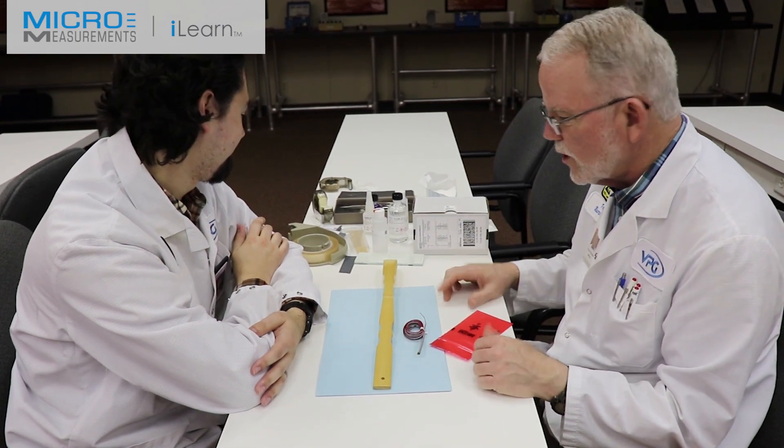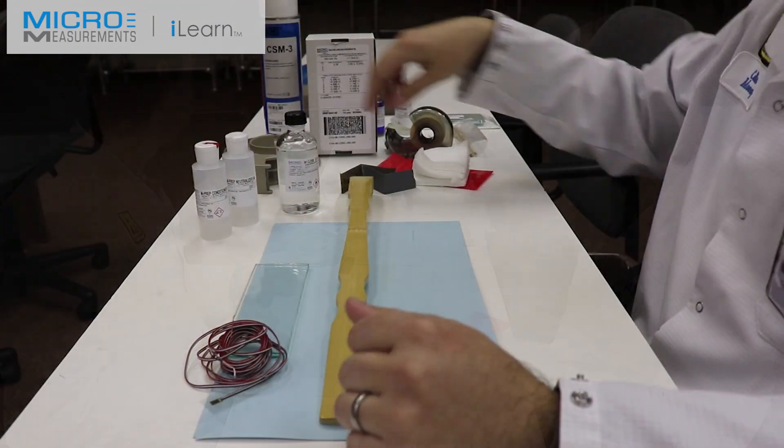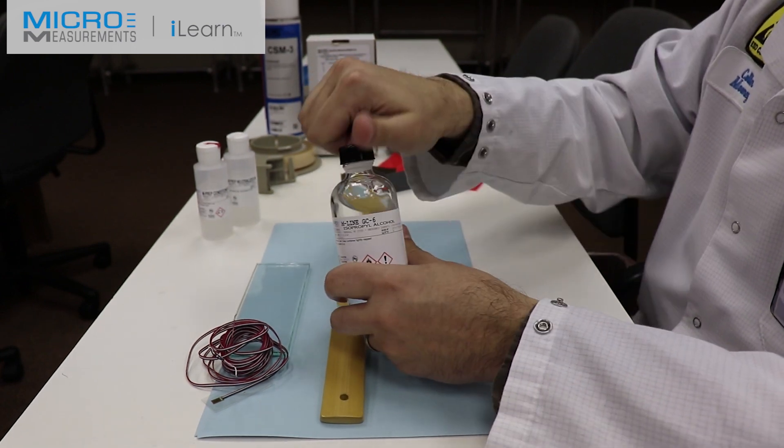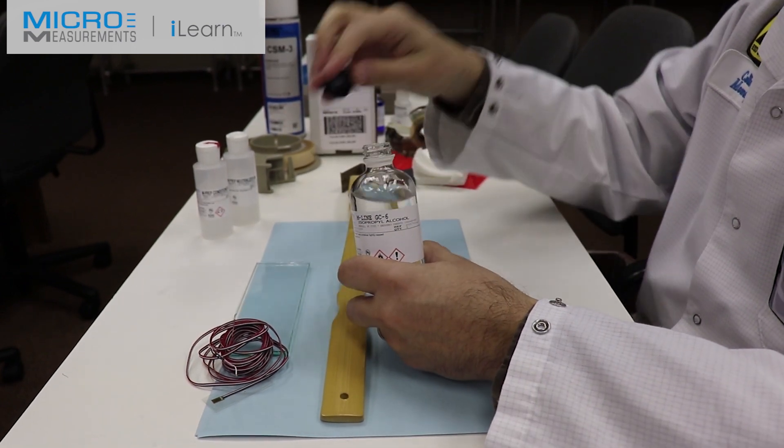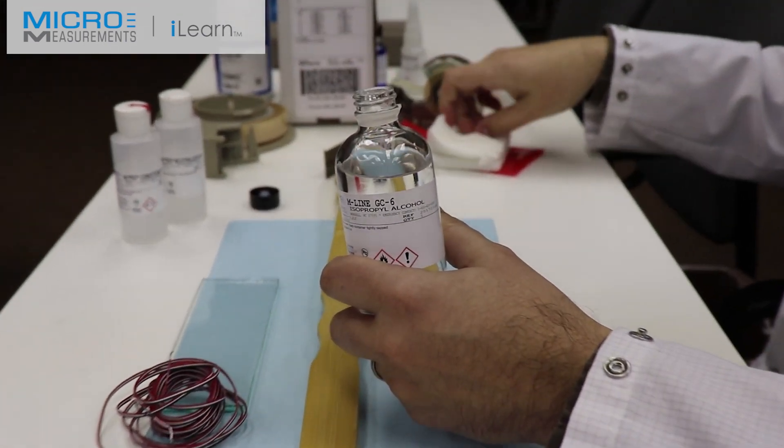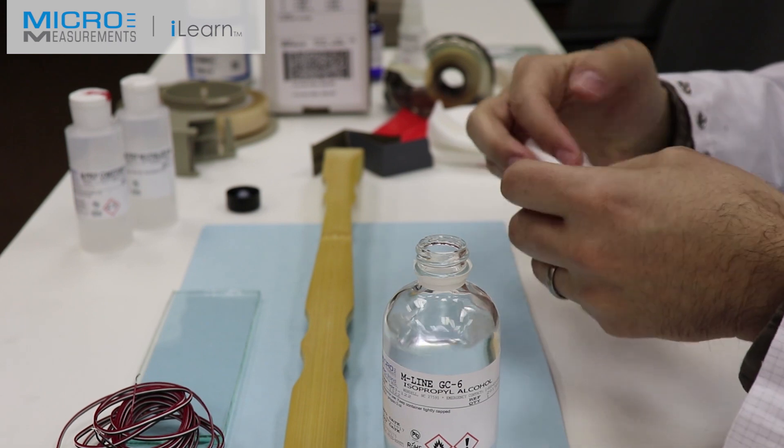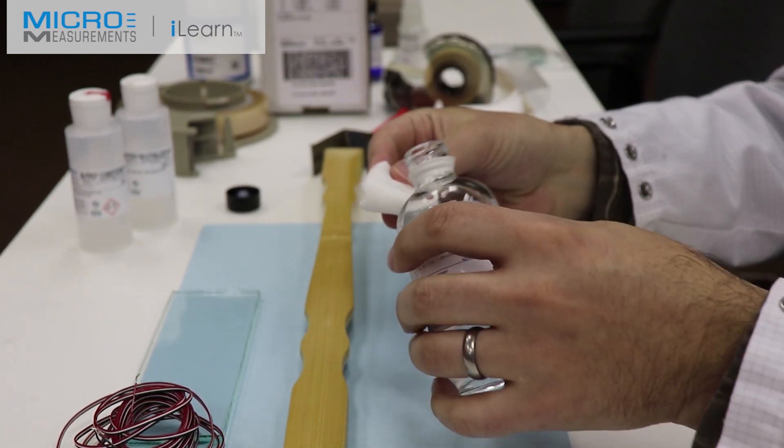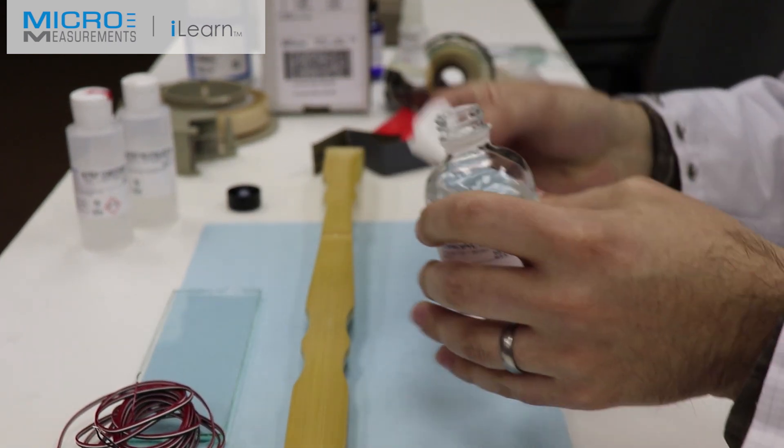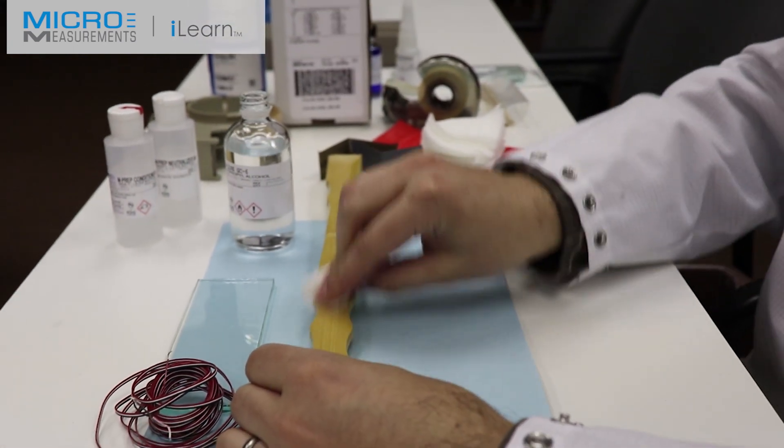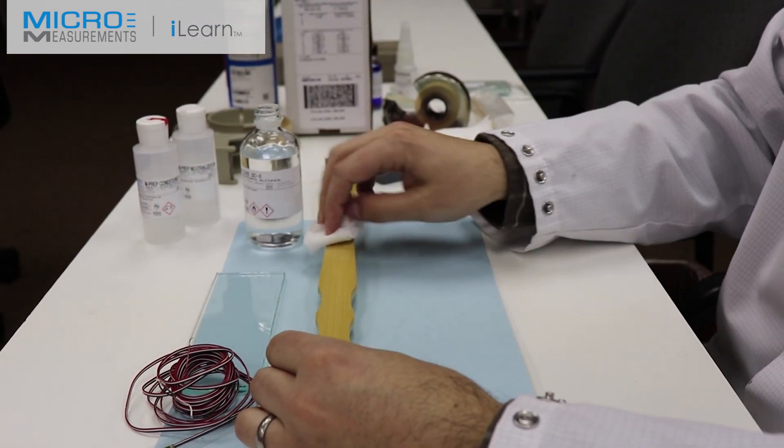Okay, so first thing we have to do is use the GC6 as a degreaser. The reason we select GC6 is because it's one of our more benign degreasers. We're not sure what it's going to do to the surface finish, so we're going to use the more benign degreaser first.